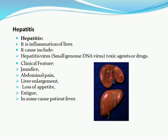Hepatitis is comprised of two words: hepa means liver, and titis means inflammation. So hepatitis means inflammation of the liver. The etiology — meaning causes — of hepatitis includes small genome DNA viruses and some toxic agents or drugs. Clinical features or symptoms of hepatitis are jaundice, abdominal pain, liver enlargement (hepatomegaly), fatigue, and in some cases fever.